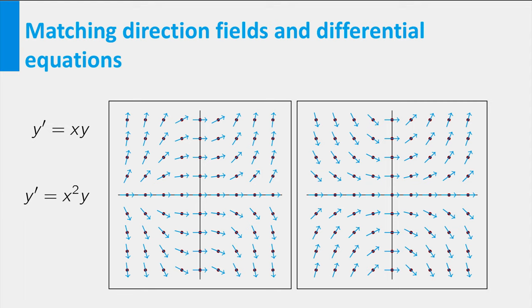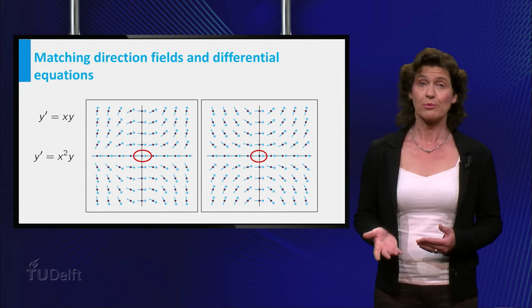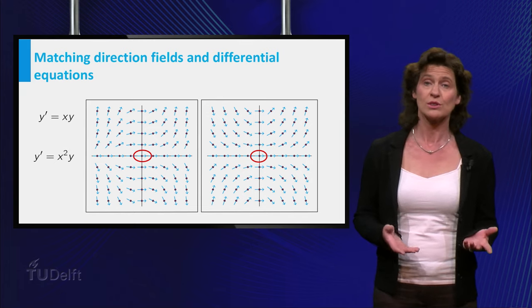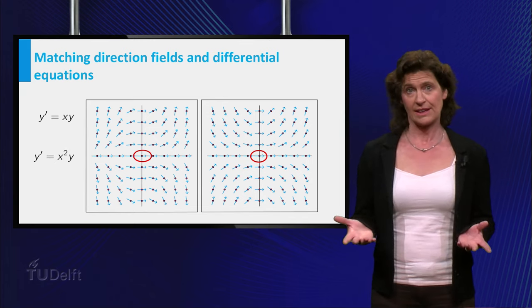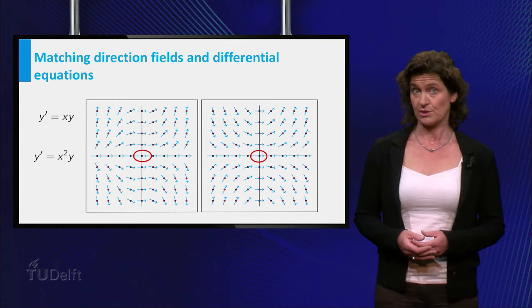Let's start by looking at the simplest point, the origin. You see that in both figures there is a horizontal line at the origin, which makes sense. But when you compute y' in both equations by setting x equal to 0 and y equal to 0, you obviously get 0 as an answer. So this doesn't help to distinguish between the direction fields.